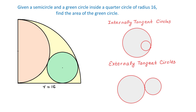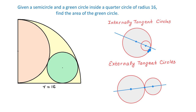Tangent circles have an important principle: the line that connects the centers of two circles also passes through the point of tangency. In the example above, we also have a line that connects the centers of the circles, and this line passes through the point of tangency. We will use this principle to find the radius of the green circle.